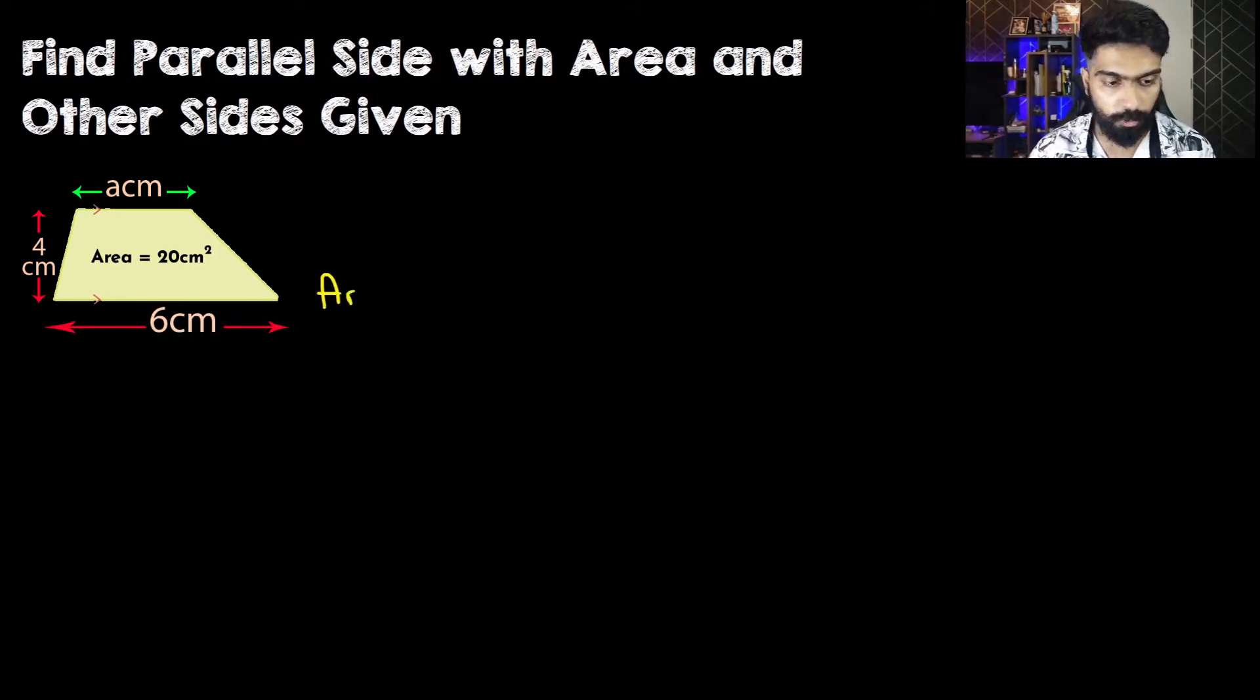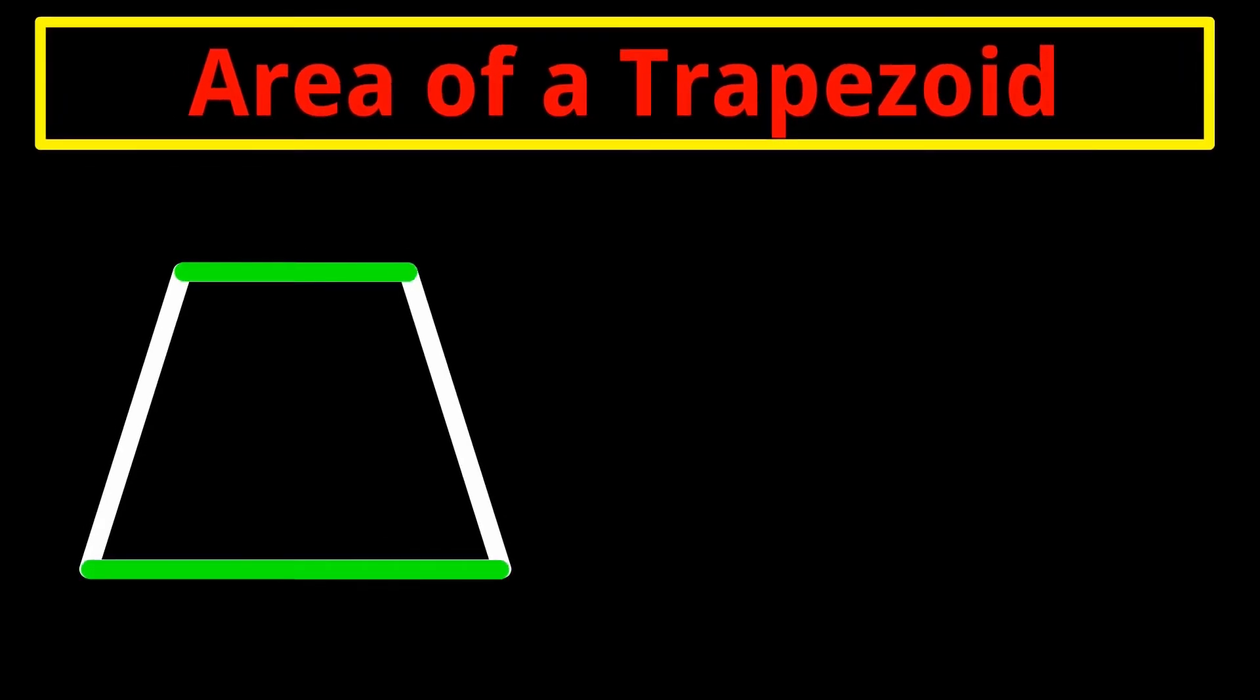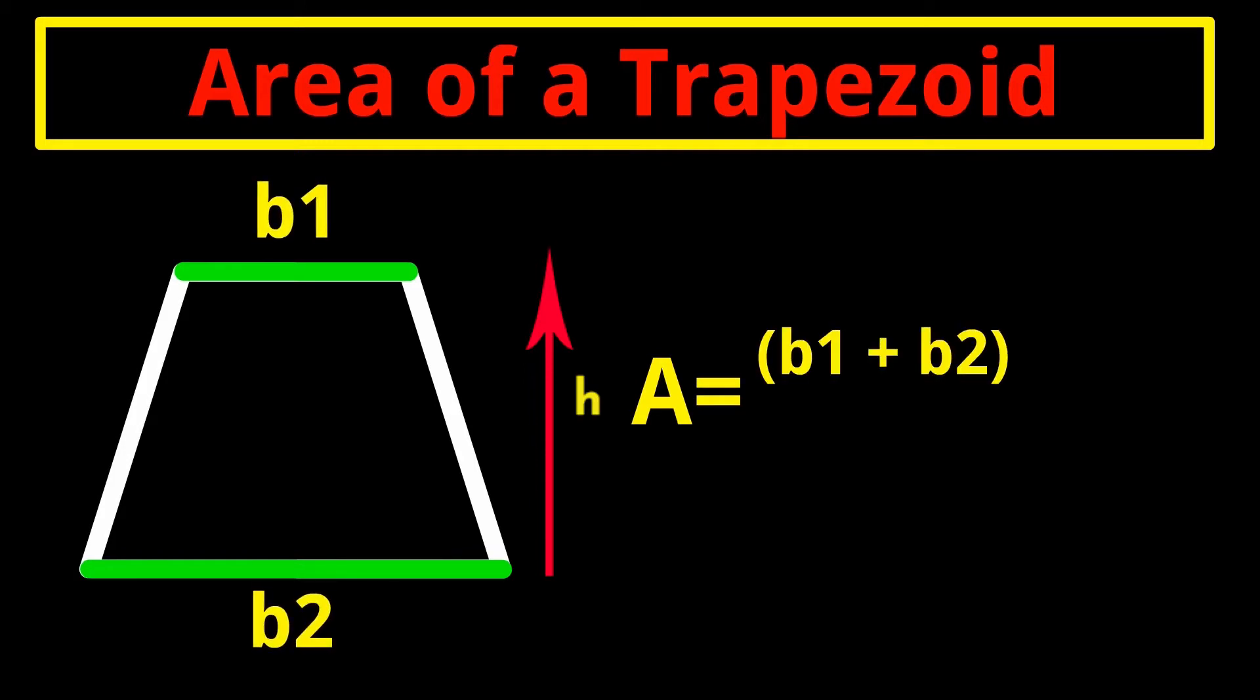How would we find the area of a trapezoid? If you watched my previous video, you know that the area of a trapezoid is the sum of the parallel sides multiplied by height and divided by 2. Let me call this b1 plus b2, which is the sum of the parallel sides multiplied by its height, and all of it divided by 2.